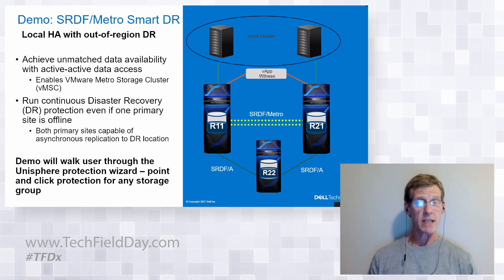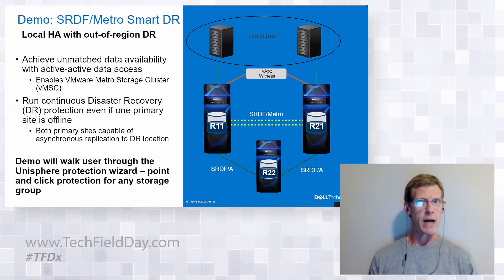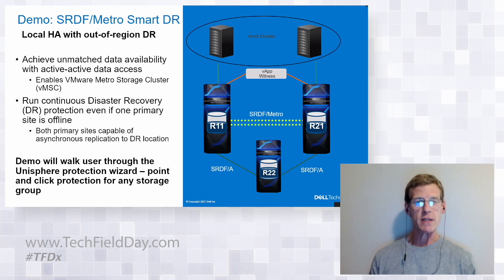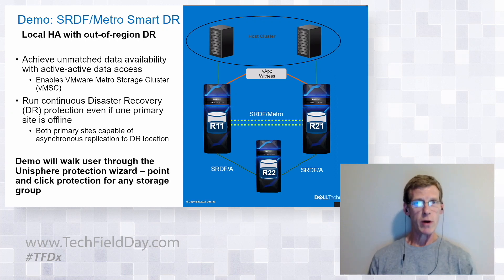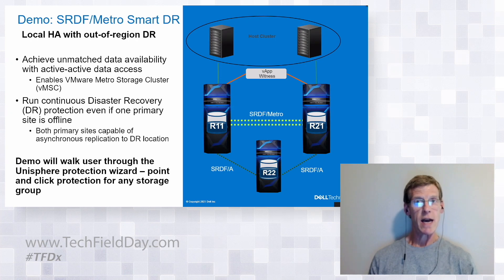This is different than having a local HA active-active solution where you might have a DR off of either array, and therefore you're reliant upon a single array talking to that remote array. In this case, what we've done is we've allowed both arrays to talk to the DR site, and either one can send the data down to it to maintain synchronicity between all of the boxes. That way, if you lose one of the HA regions, you still have the other one, and it's still reporting down to the DR. If there was a catastrophe and you lost the entire Metro region, then you'd be able to go down to the DR site and have all the data that was synchronized between the active-active.